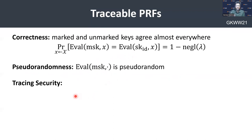The tracing security means that if the adversary is able to produce a useful distinguisher D, which can differentiate between the input-output behavior of the pseudorandom function from the truly random function on randomly sampled inputs — that is, it can break weak pseudorandomness — then the identities used to construct D should be traceable, at least one of them.